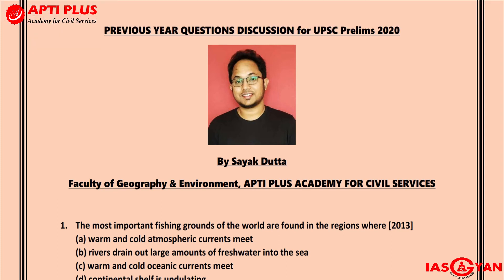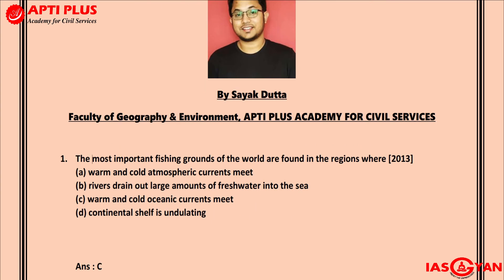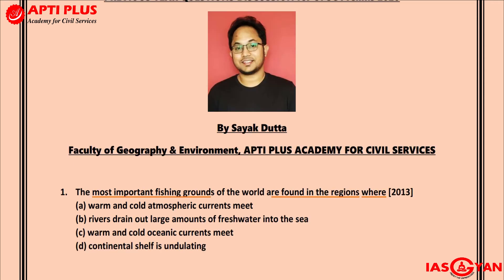The first question for today: the most important fishing grounds of the world are found in regions where A) warm and cold atmospheric currents meet, B) rivers drain out large amounts of fresh water into the sea, C) warm and cold oceanic currents meet, and D) the continental shelf is undulating. This question asks about the physical conditions necessary for an area to become an important fishing ground, and was asked in UPSC prelims 2013.